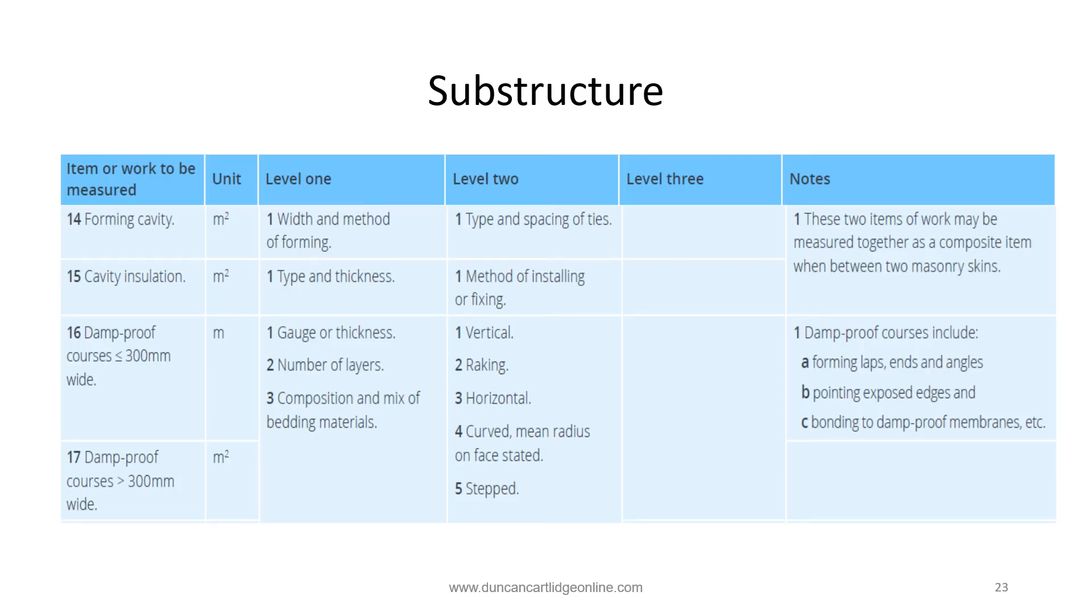This is page 201 of NRM2 2nd edition and contains the rules for the measurement of cavities and damp proof courses which will be dealt with on the next page. Once again, the mean girth can be used for this item. By now you've probably come to the conclusion that it's essential that the calculation of the mean girth is accurate, as any error will have a knock-on effect for several items.